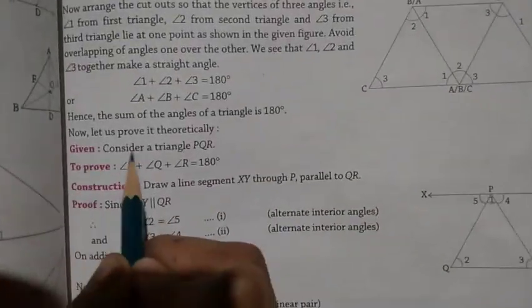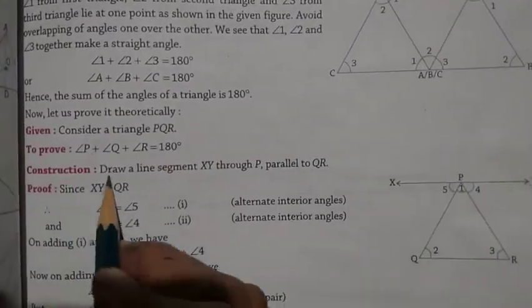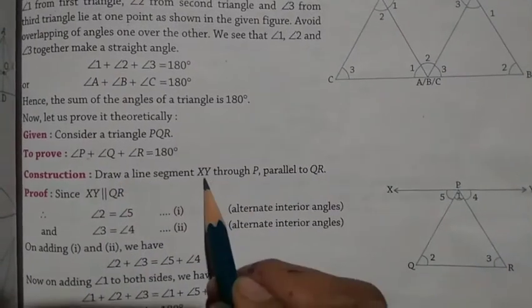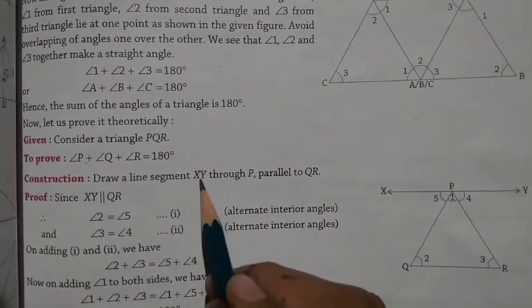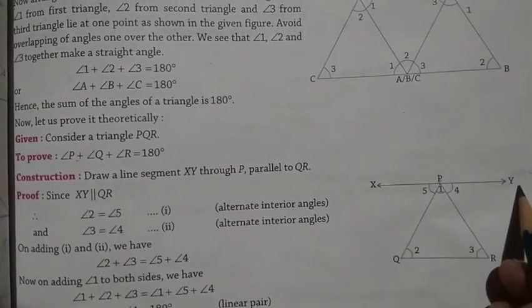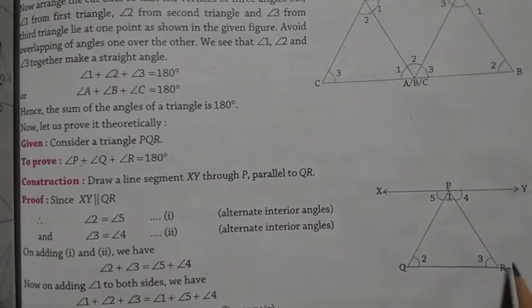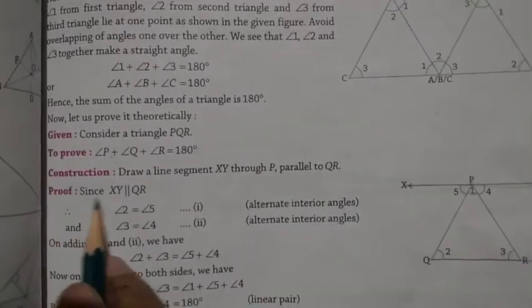We will verify this with an activity. Consider triangle PQR. We need to prove that angle P plus angle Q plus angle R is equal to 180 degrees. Construction: Draw a line segment XY through point P parallel to QR.